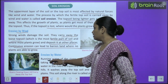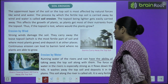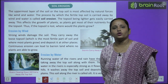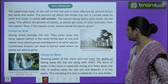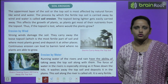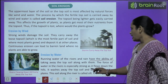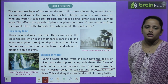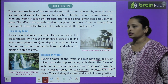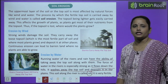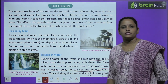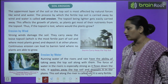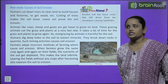Erosion by water: running water of the river and rain have the ability to take away the top soil. The force of water in the river is specially strong as it flows down the hills — it washes away the top soil and deposits it in the plains. This soil along the river is called silt, and it is very fertile.